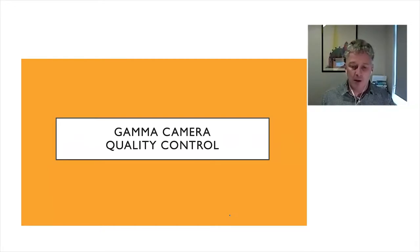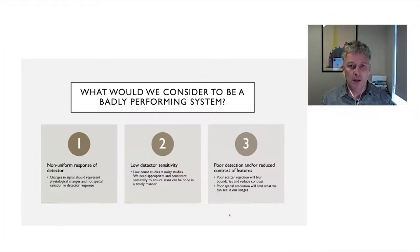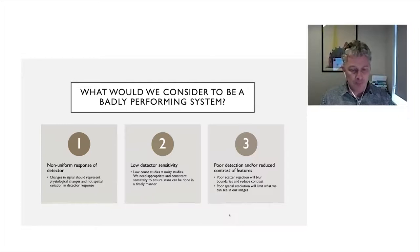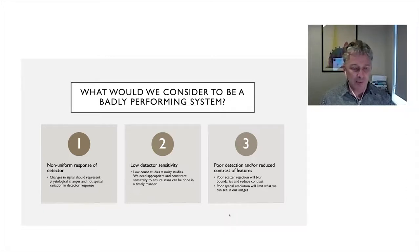Now let's get to the actual gamma camera quality control. What we're trying to do is ensure good imaging performance. To do that, it's important to consider what a badly performing system would look like. A bad system would first have a non-uniform response across the detector — changes in signal should represent physiological changes, not spatial variation in detector response. So it's important to assess the uniformity of response. Second, we need to look at detector sensitivity: fewer counts per voxel means noisier studies, so we need appropriate and consistent sensitivity.